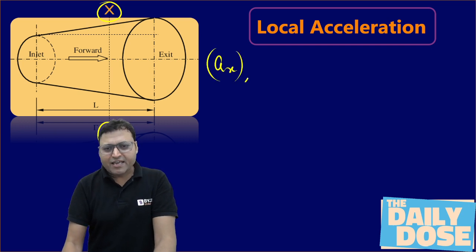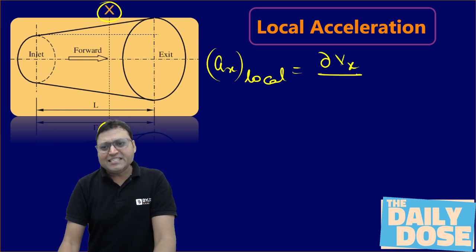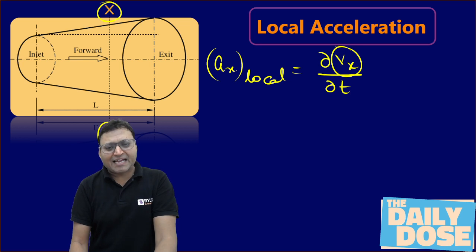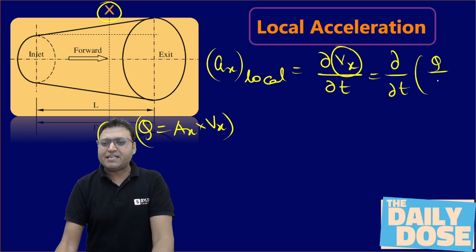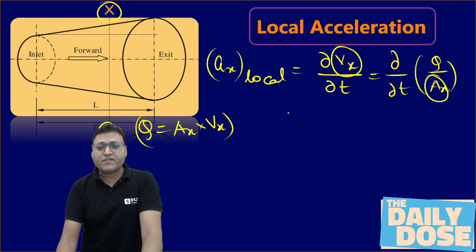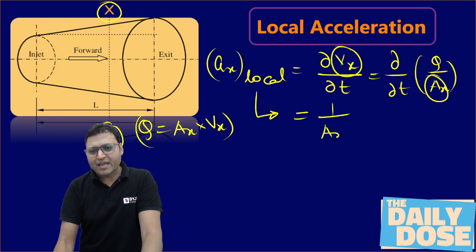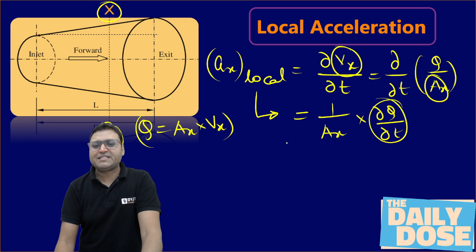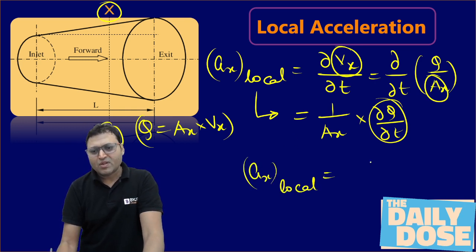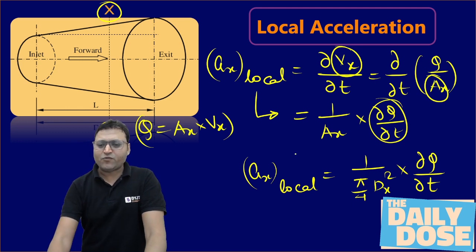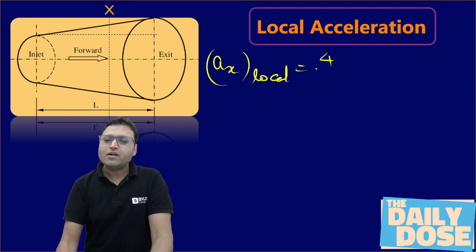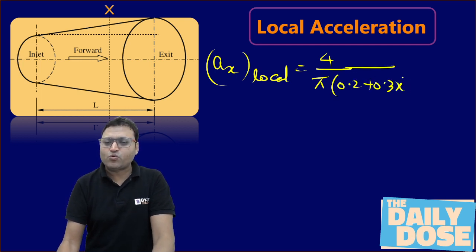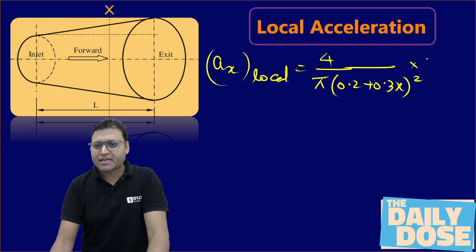Local acceleration is given by the change in velocity with time. At any x, the discharge equals Ax times Vx, so Vx = Q/Ax. The local acceleration is ∂Vx/∂t = (1/Ax)·(∂Q/∂t), since area is independent of time. So local acceleration equals 1/(π/4·dx²) times ∂Q/∂t. The final expression becomes: local acceleration = 4/(π·(0.2 + 0.3x)²) times 0.05 (since ∂Q/∂t = 50 L/s/s = 0.05 m³/s²).